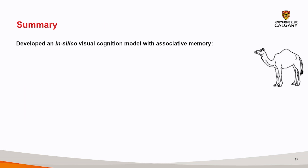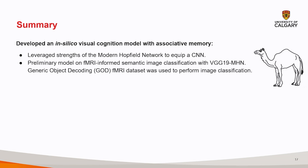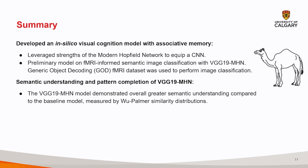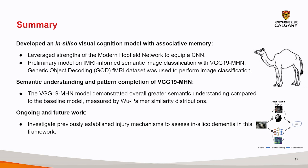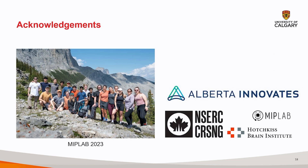In summary, we developed a first-step brain decoding pipeline serving as a visual cognition model. We leveraged the strengths of both the modern Hopfield network for associative memory and VGG-19 for feature extraction. We used the generic object decoding dataset to develop an fMRI-informed pipeline for image classification. Our preliminary results show the model with the modern Hopfield network produced more centered Wu-Palmer similarity distributions, indicating improved semantic association and pattern completion. For ongoing and future work, we are investigating previously established injury mechanisms to assess the impact of in-silico dementia in this framework.